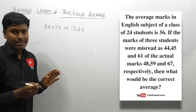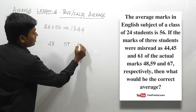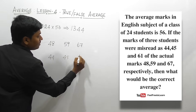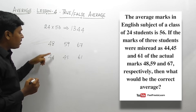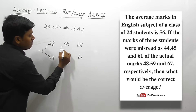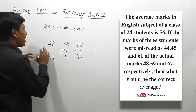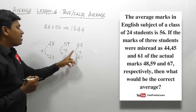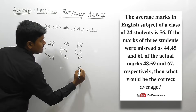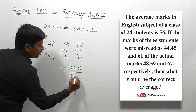First student: actual 48, wrong reading 44 — 4 marks less, add 4. Second student: actual 59, wrong reading 45 — 14 marks less, add 14. Third student: actual 67, wrong reading 61 — 6 marks less, add 6. Total to add: 4 + 14 + 6 = 24. Correct total: 1344 + 24 = 1368, divided by 24 students.